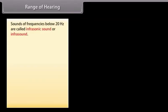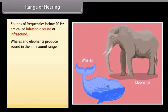Sounds of frequencies below 20 hertz are called infrasonic sound or infrasound. Some animals like whales and elephants produce sounds in the infrasound range.